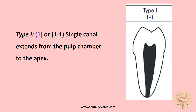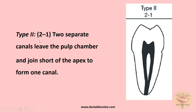Type 1, simply called '1', is a single canal extending from the pulp chamber up to the apex — single canal. Type 2, or '2-1', has two separate canals leaving the pulp chamber that join before reaching the apex to form one canal.